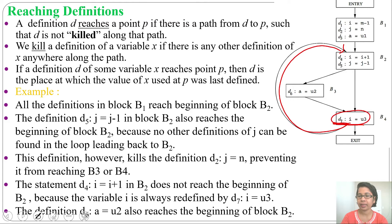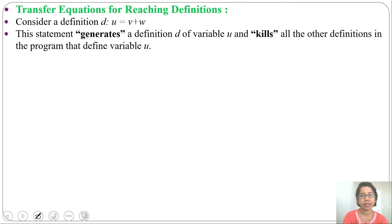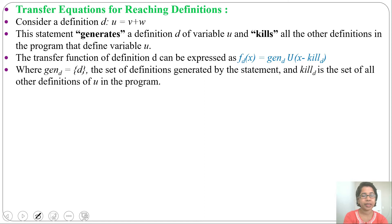When generating D7, at the same time we are killing D4 and D1. Let's discuss the transfer equation for reaching definition. Consider a definition D: U = V + W. This statement generates a definition D of variable U and kills all other definitions in the program that define U. So when we are generating, at the same time it will kill all other definitions on variable U — written as GEN. The transfer function of definition D is expressed as FD(X) = GEN(D) ∪ X − KILL(D). GEN(D) will generate definition D — it is the set of definitions generated by the statement — and KILL(D) is the set of all other definitions of U in the program.